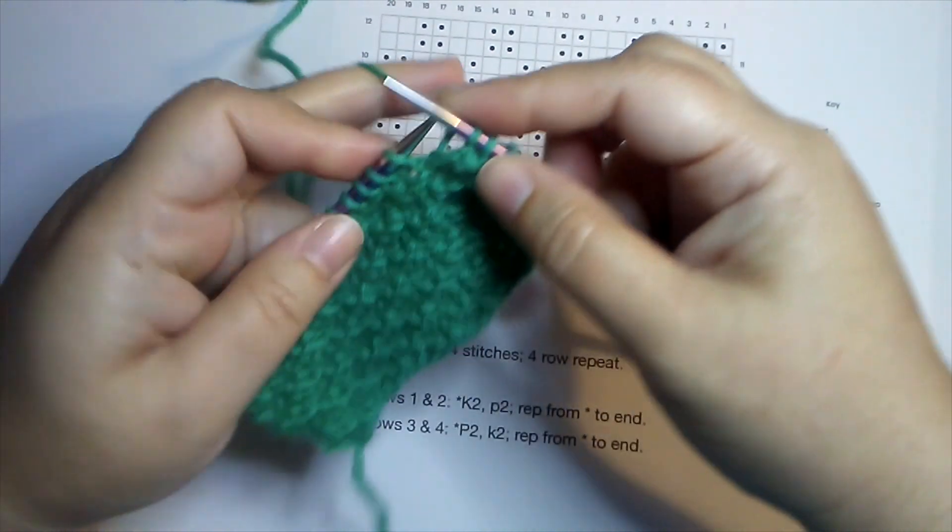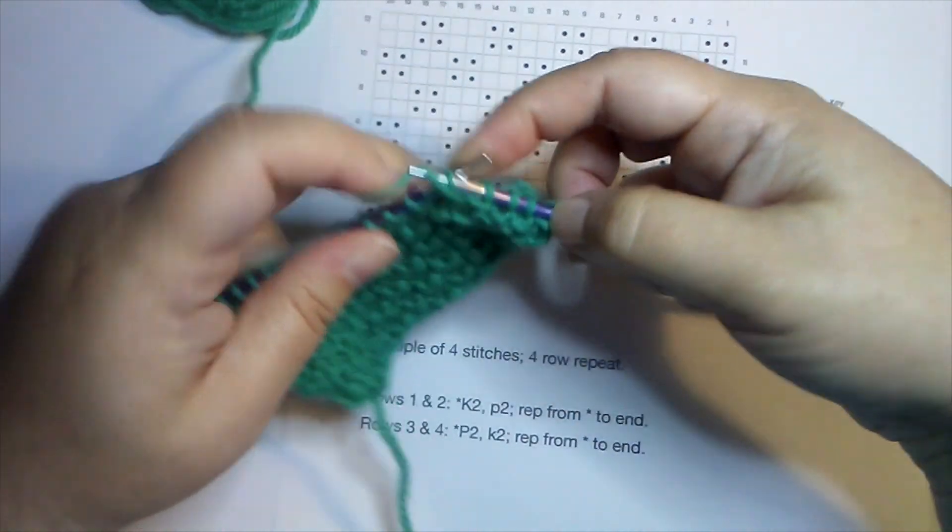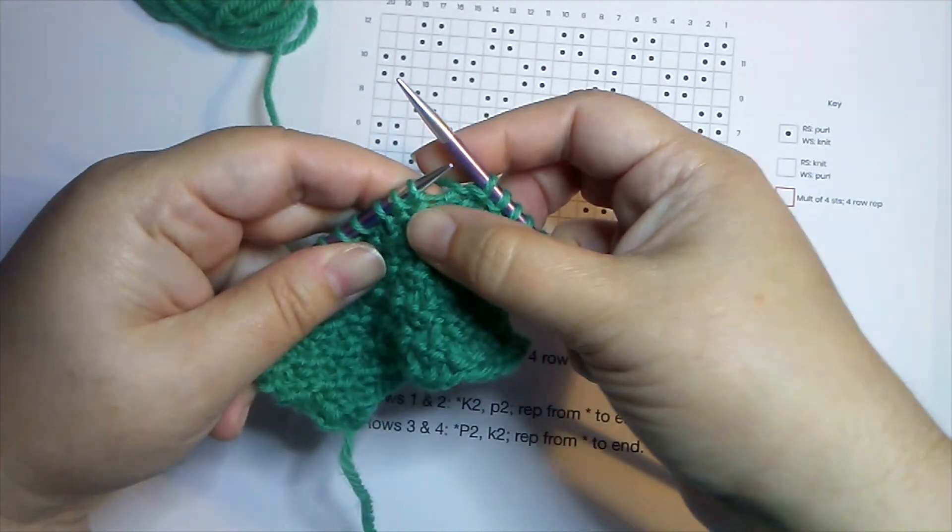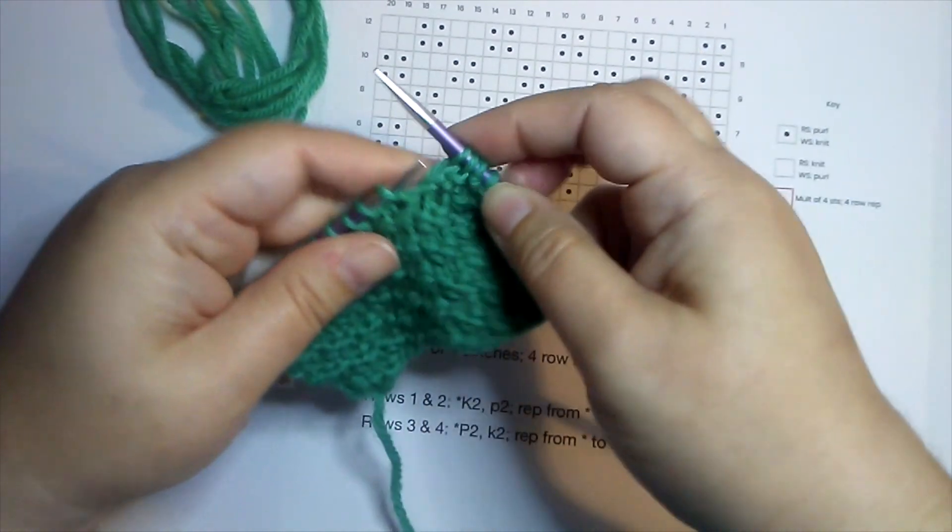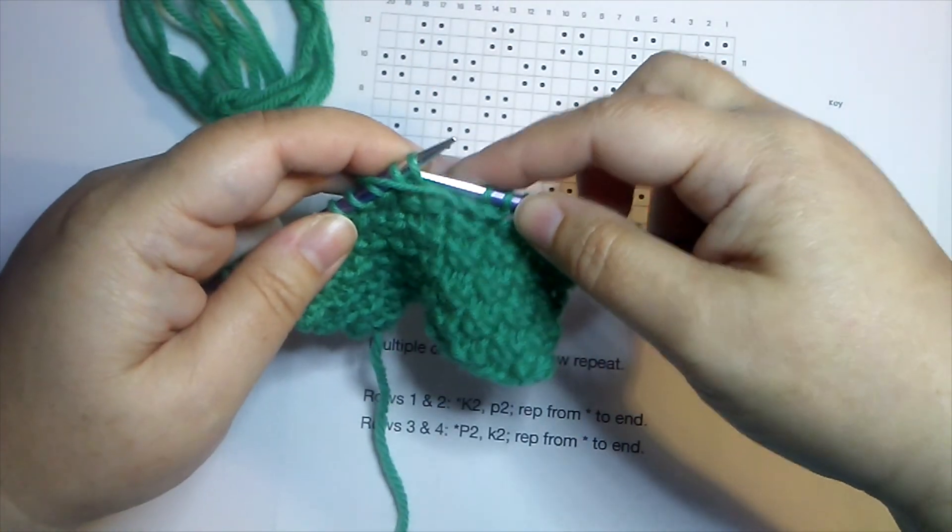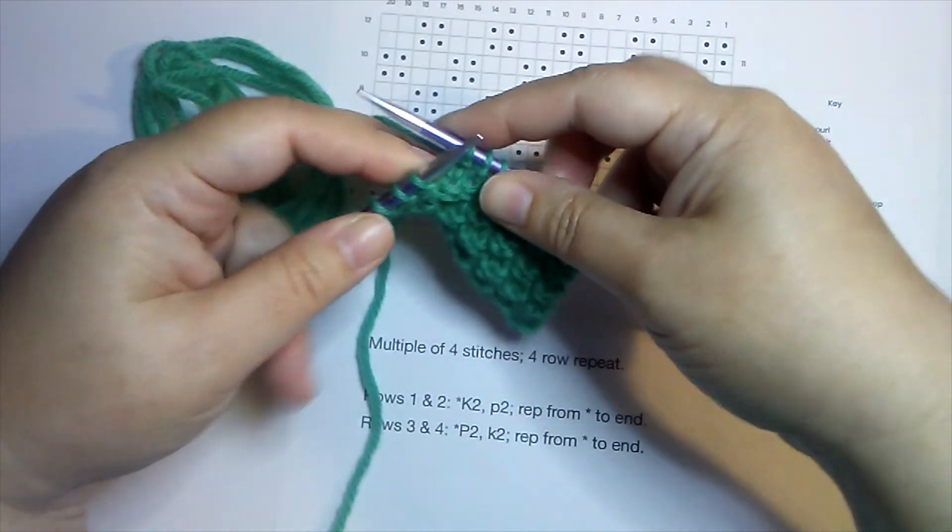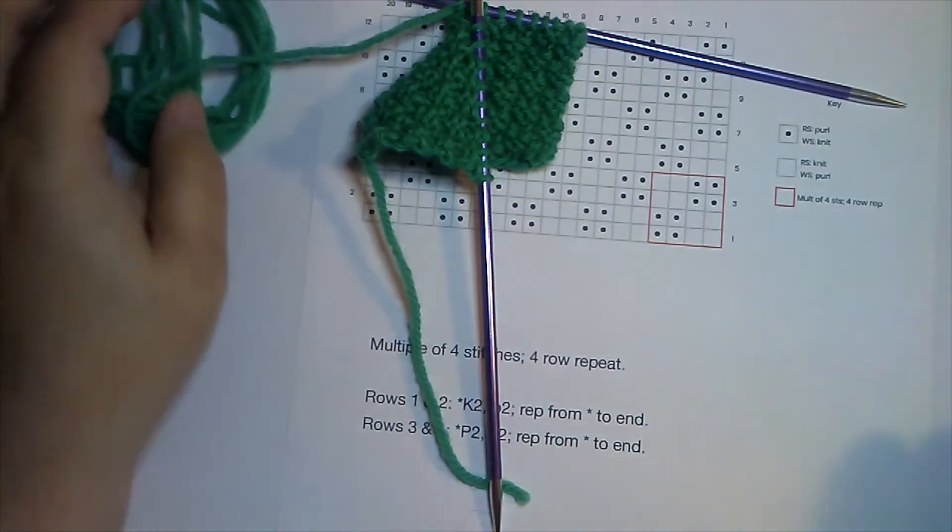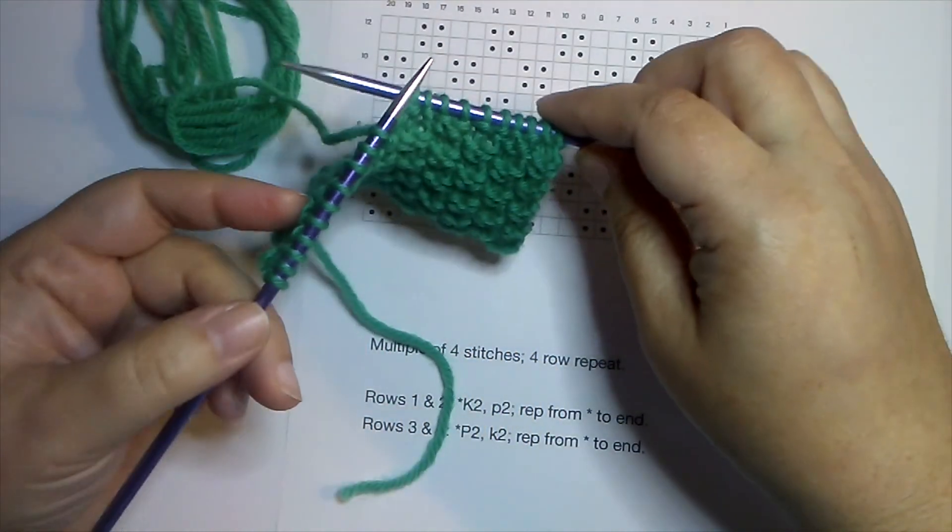There, I finished that first set. Okay, now if I had set this down and I couldn't remember where I left off, I can see my cast on edge, I'm on a right side row, and I finished with knit stitches. My last row worked was a knit row, so I know to break that pattern I start with purl stitches on this side.